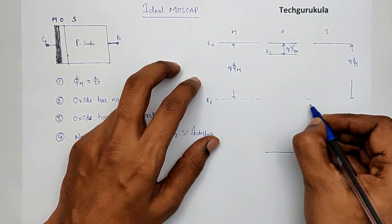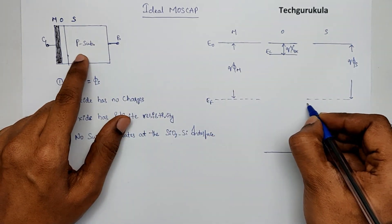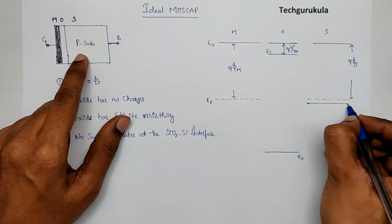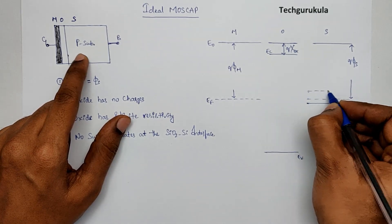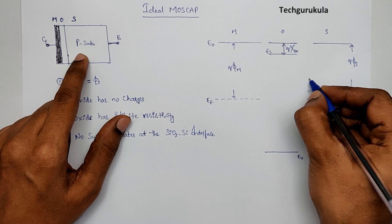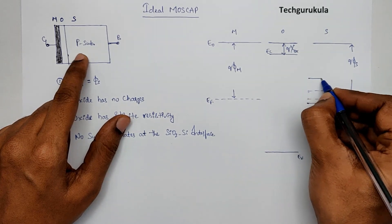In this case, now, as we assumed it is P type substrate, EV should be somewhere here. And EI should be somewhere here. And EC is here.